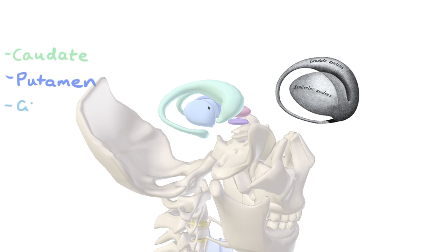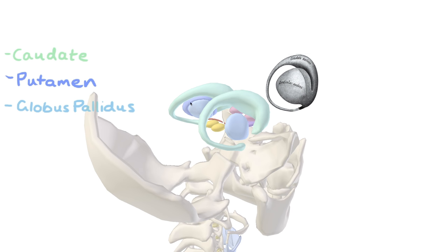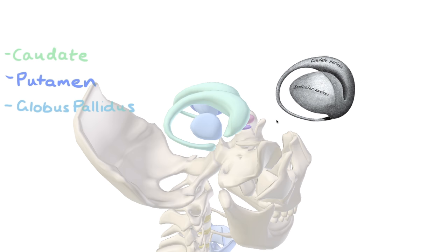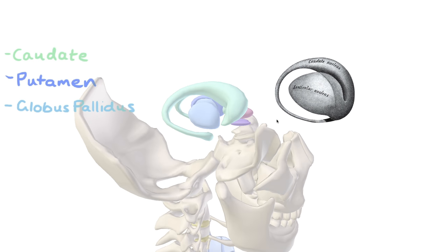Together those two make up the lenticular nucleus. To make things a little bit more confusing, the caudate nucleus and the lenticular nucleus together are known as the striatum, or the dorsal striatum to be more precise.